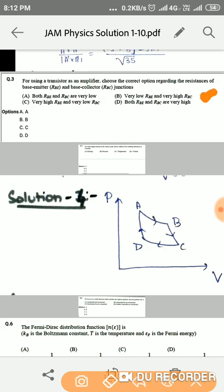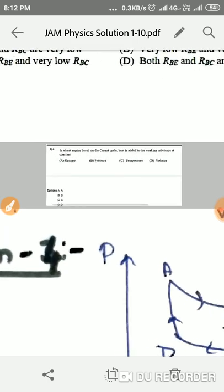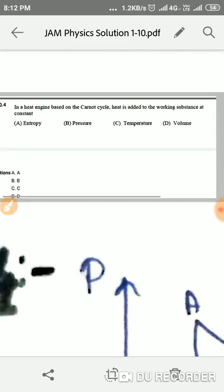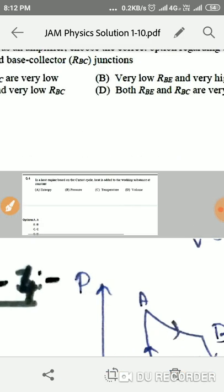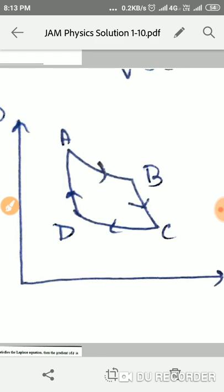Moving to question number four, in a Carnot cycle, when heat is added to the working substance, which of the following quantity is constant: entropy, pressure, temperature, or volume? For that you have to see the PV diagram of a Carnot engine.